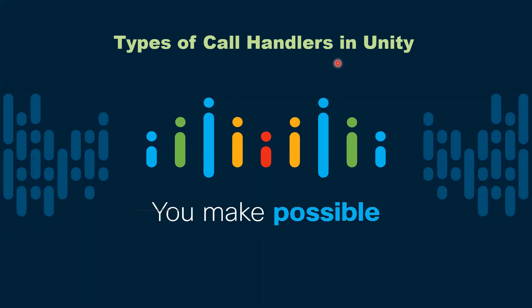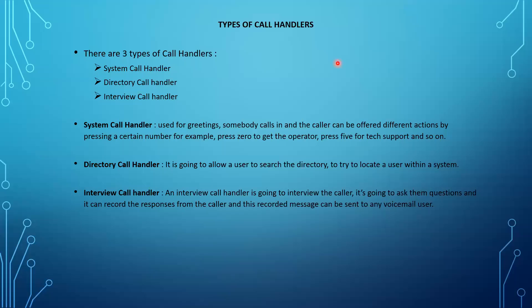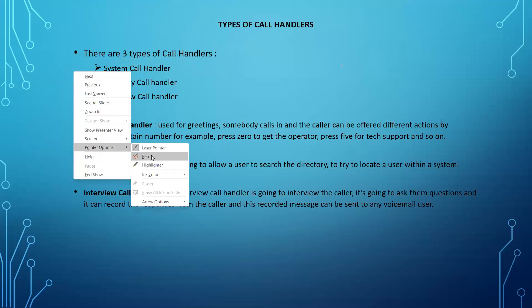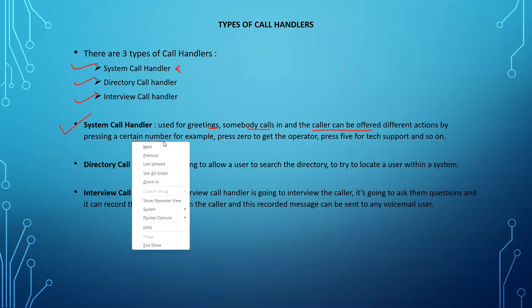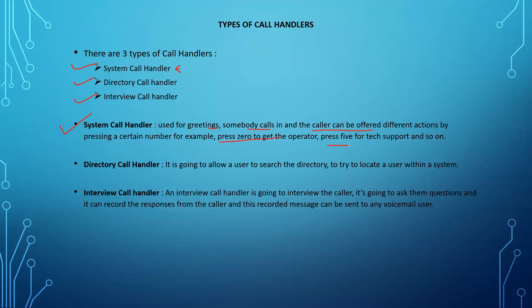Today I'm going to talk about the types of call handlers in Unity — how many types we have. There are three types of call handlers: the first is the system call handler, then we have the directory call handler, and the third is the interview call handler. The system call handler is mainly used for greetings — somebody calls in and the caller can be offered different actions by pressing a certain number, for example press 0 to go to operator or press 5 for tech support.